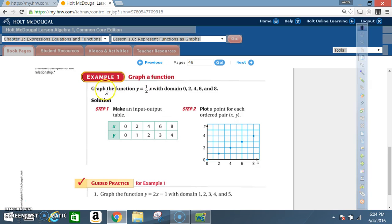Example 1. Graph a function. Graph the function y is equal to 1 half x with domain 0, 2, 4, 6, and 8. Step 1. Make an input-output table. So you take your x values, also called the domain, and you label them 0, 2, 4, 6, and 8. Then, you're going to take these values one at a time, and you're going to put them in the original function or equation that they gave you. And then, that's going to help you to determine your y values. After determining all your y values, now you're in position to plot your graph.